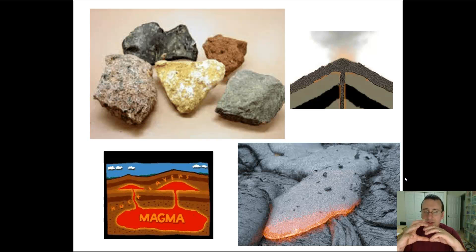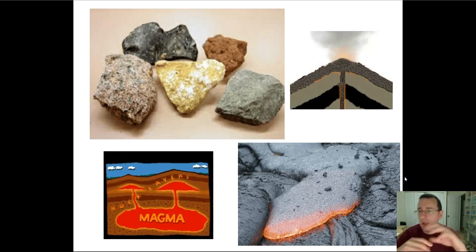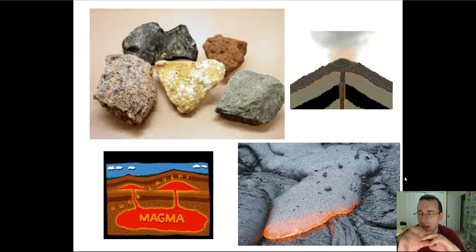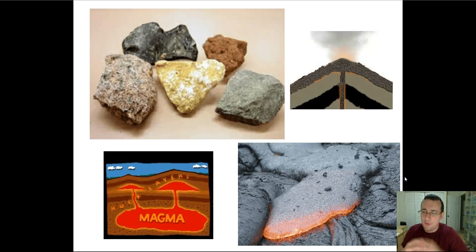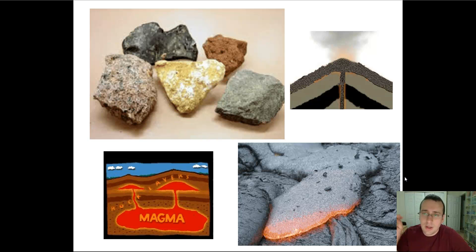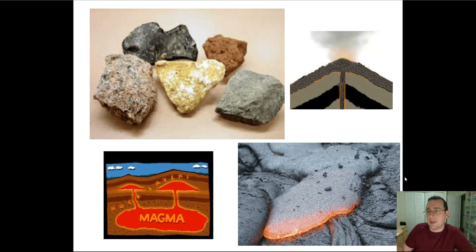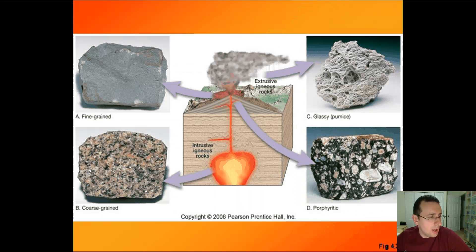That difference in cooling rate changes the way the rock crystallizes. Rocks that cool down slower will have more fractional crystallization, more variation between crystal sizes, and they will tend to be more coarse-grained or rough. Rocks that cool faster are more fine-grained. How fast crystallization happens will actually change the texture of the rock.